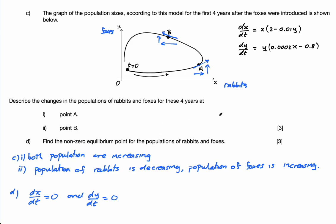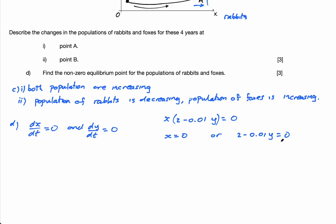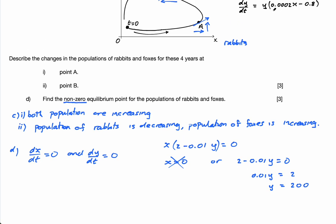Setting dx/dt = 0: x times (2 − 0.01y) = 0. This gives either x = 0 or 2 − 0.01y = 0. Solving the second: 0.01y = 2, so y = 200. We can't use x = 0 because the question asks for the non-zero equilibrium point, so y = 200.